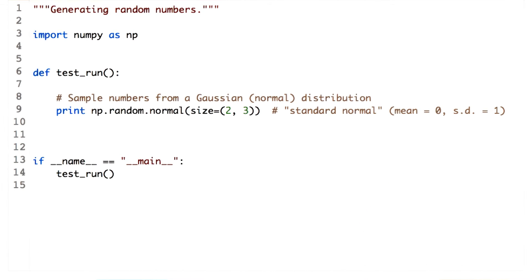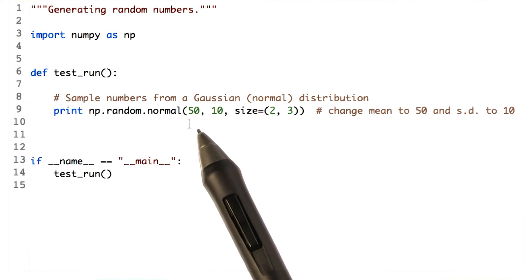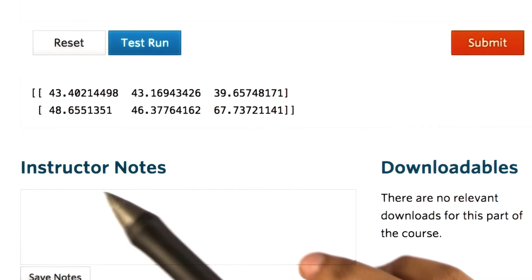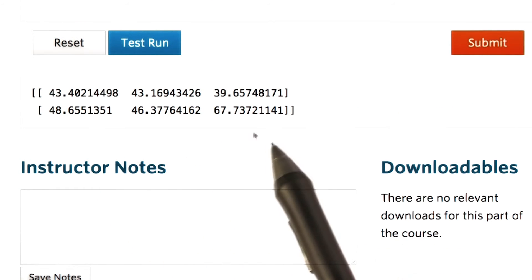You can change the mean and standard deviation as well. Let's see how to do that. We change the mean to 50 and standard deviation to 10. Now let's see the output. Notice that the values are centered around 50.